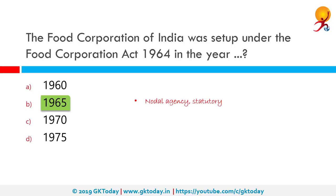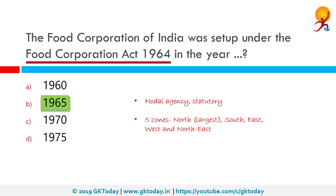The nodal agency in food management is the Food Corporation of India, responsible for procuring, storing and distributing food grains. FCI is a statutory body established under the Food Corporation Act 1964 to meet food policy objectives: effective price support operations for farmers, distribution of food grains through the public distribution system, and maintaining satisfactory levels of operational and buffer stocks for national food security. For its functions, FCI has divided the country into 5 zones — the largest being the North zone comprising 8 states including Punjab and Haryana.